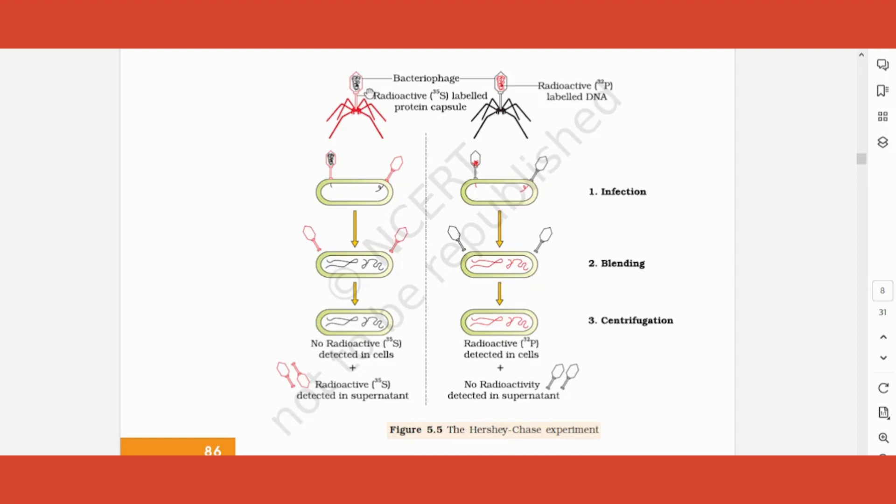What they did was they knew that DNA contains phosphorus, and sulfur is present in protein. So that is the indicator for DNA or protein. How is it the indicator? Let's learn.